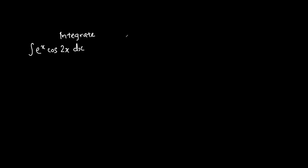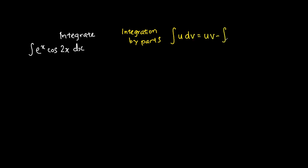The first thing that we need to understand is about integration by parts, because we are using integration by parts to solve this kind of problem. The integration by parts states that if I were to take a term and make it as u, the other term as dv, this is equivalent to uv minus the integration of v du.